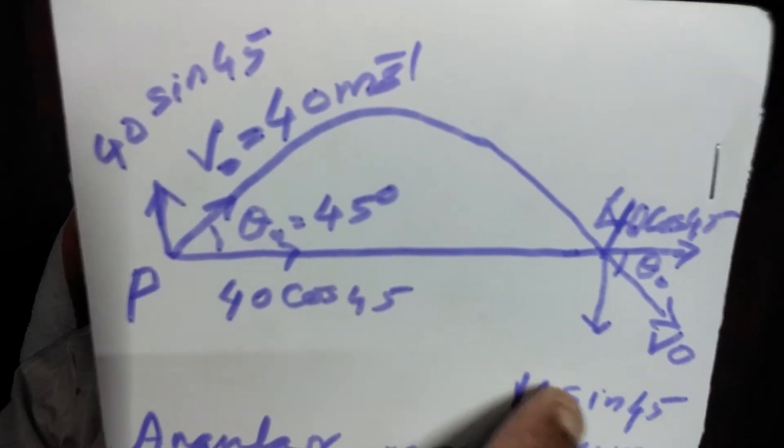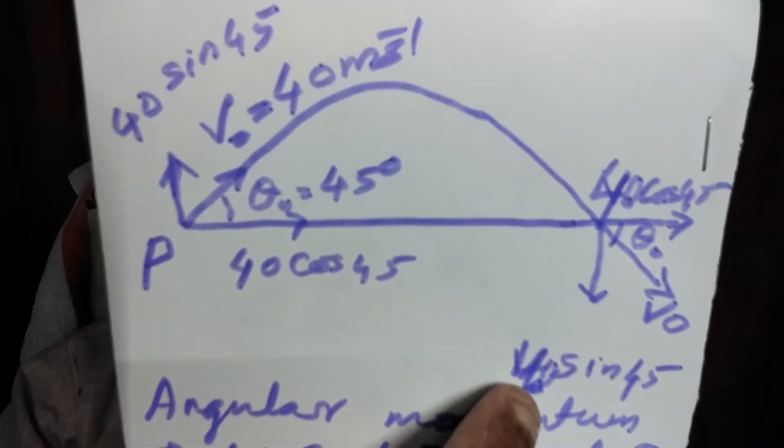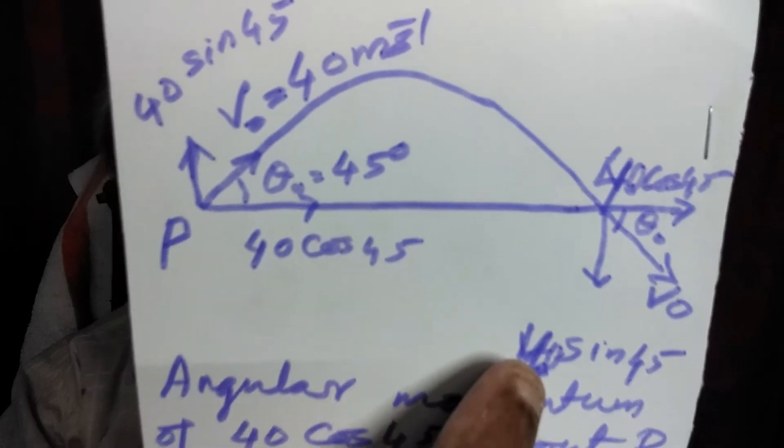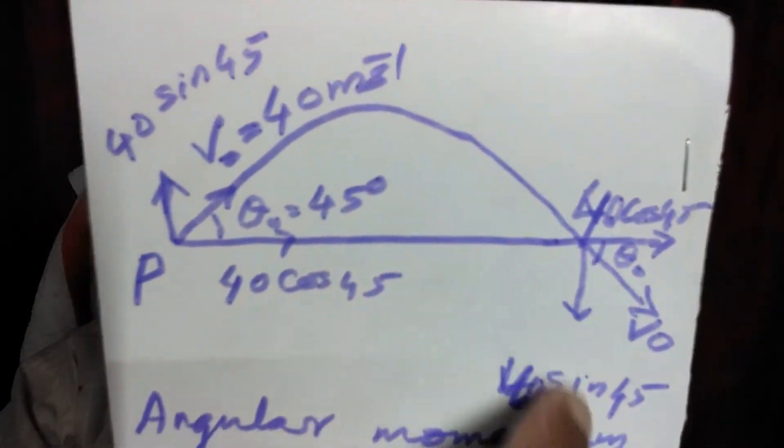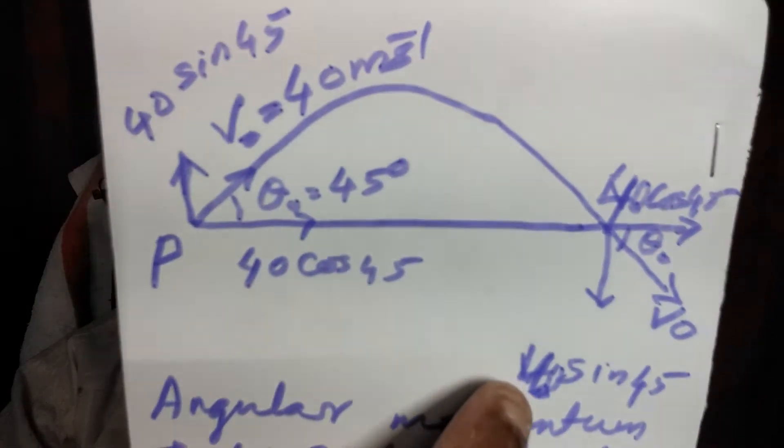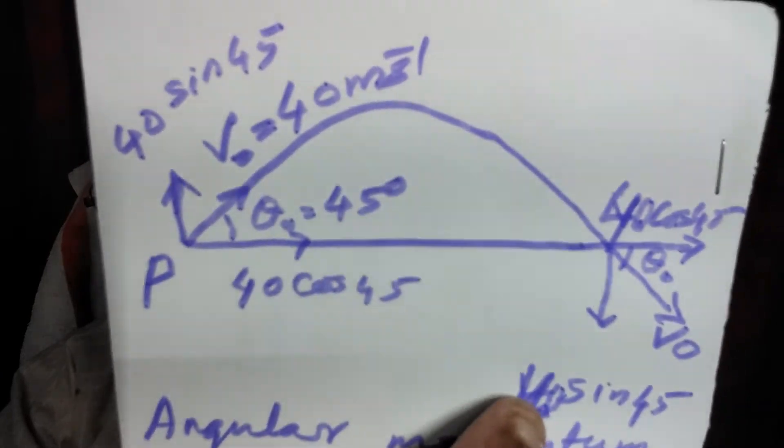Mass into velocity. Mass is 2√2 kg. This is the vertical linear momentum: 2√2 into 40 sin 45.